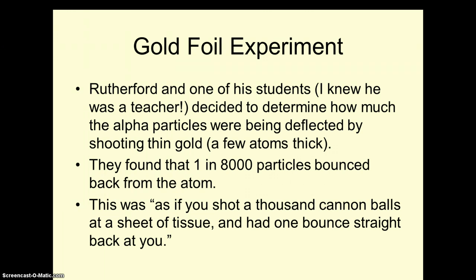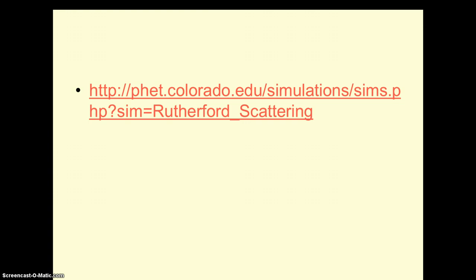He was thoroughly amazed by this. He said it's as if you shot a thousand cannonballs at a sheet of tissue and had one bounce straight back. Imagine that. You've got a sheet of tissue paper hanging off a clothesline, and you shoot a cannonball at it, and it goes right through. The next one goes right through. The next one goes right through. And then randomly, one of them bounces back. That's what an alpha particle was, remember, that cannonball that could bounce back. This website is definitely worth checking out. I'll upload the PowerPoint video so that you can link on it. The FET website from the University of Colorado at Boulder has a fantastic model of Rutherford scattering, definitely worth checking out.